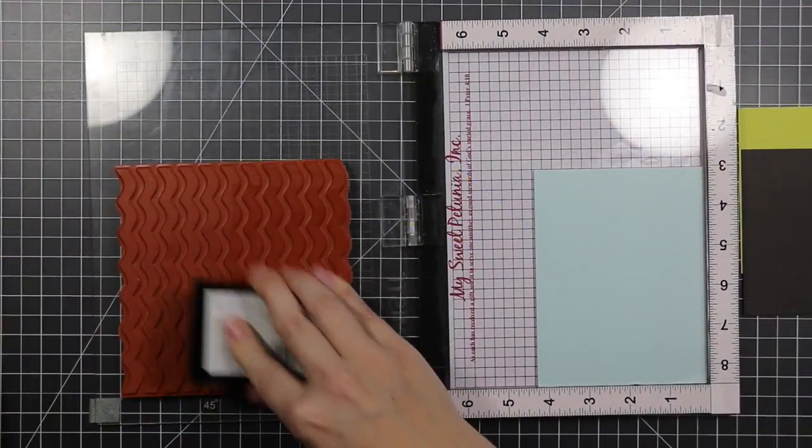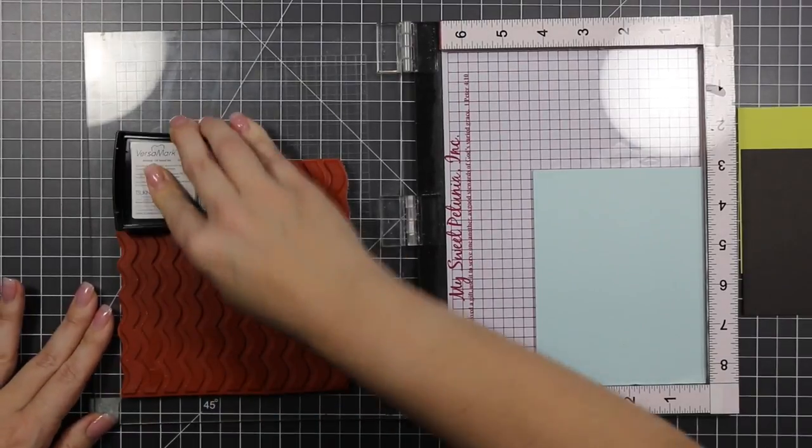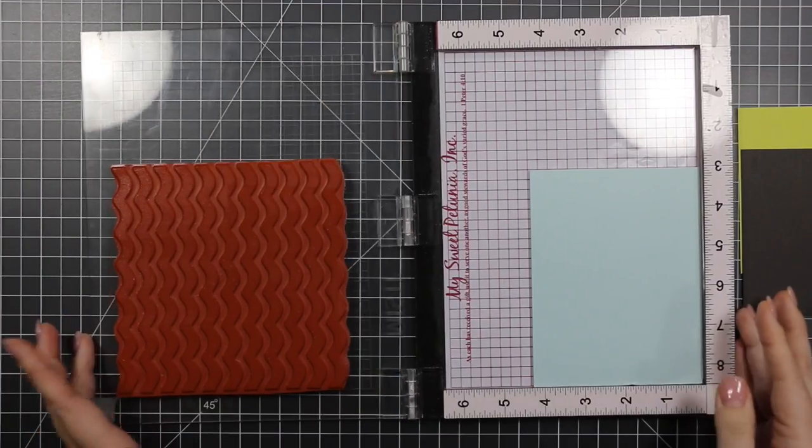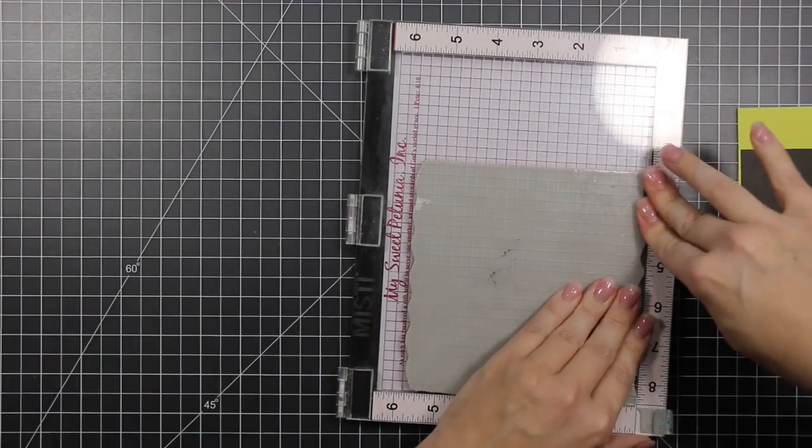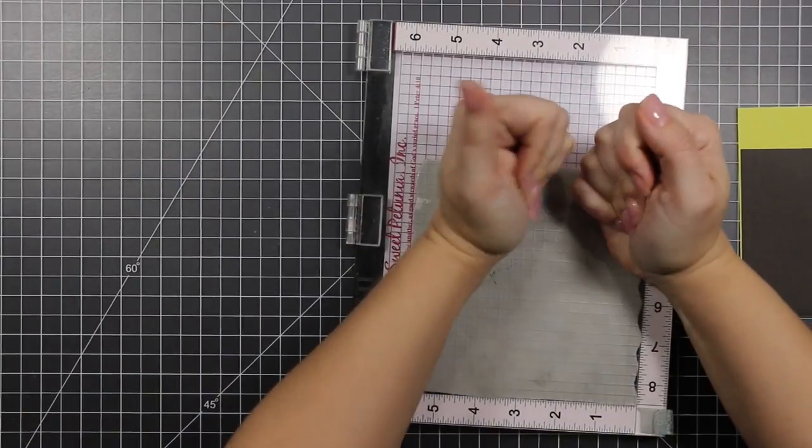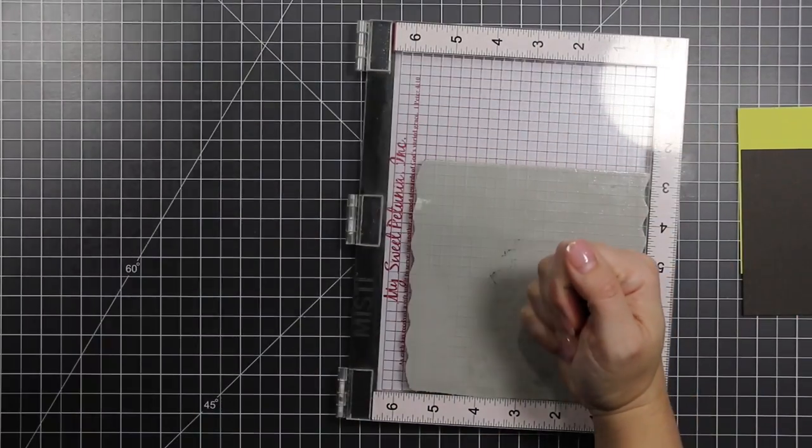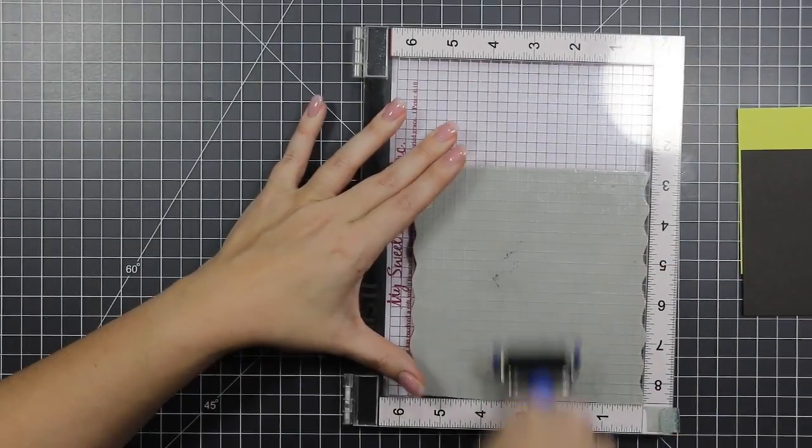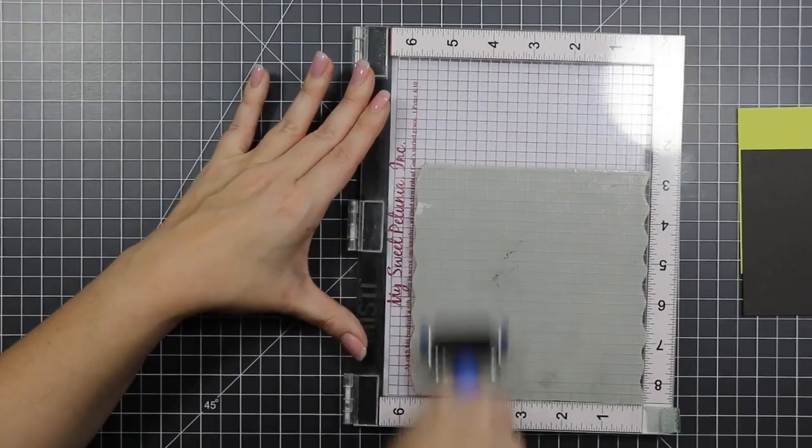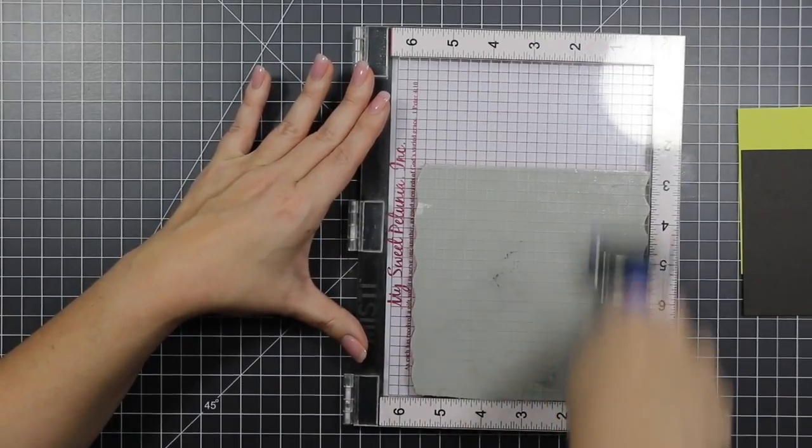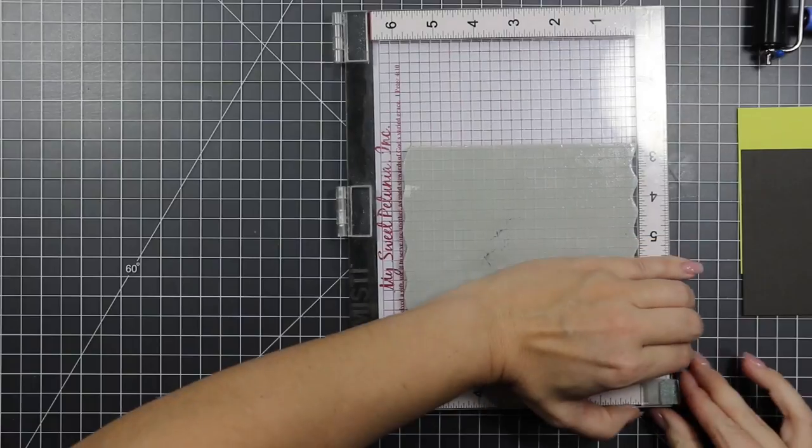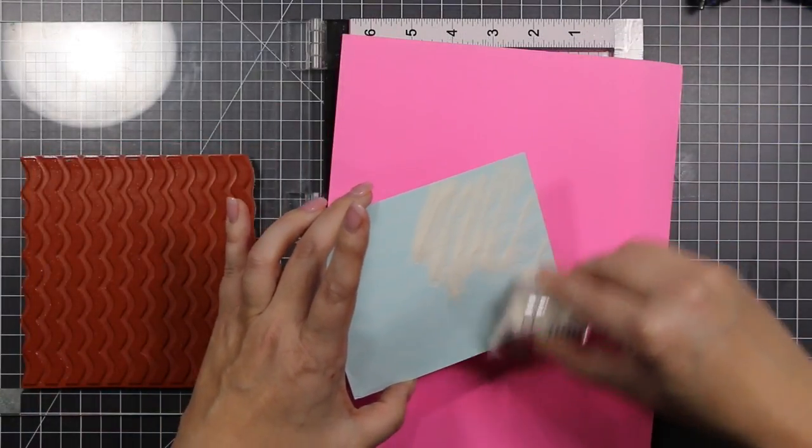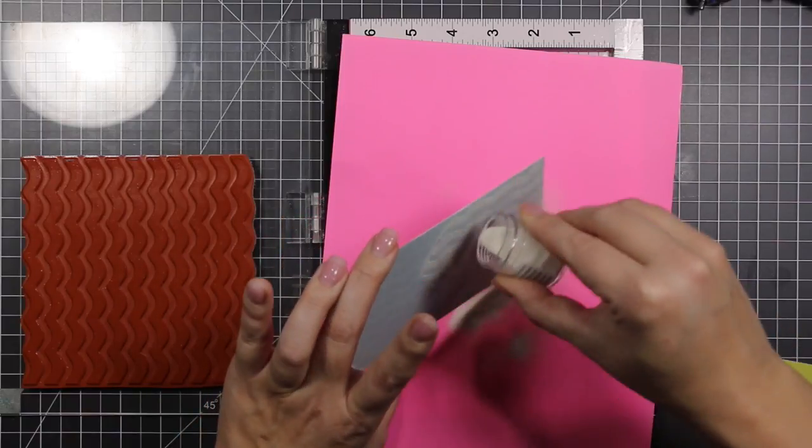We're taking this My Favorite Things wave background die and Versamark ink on some Simon Says Stamp sea glass cardstock. We are going to heat emboss. I love using the Spellbinders tool with my background stamps to get even pressure. We're going to use Wow silver pearl embossing powder on this sea glass background.